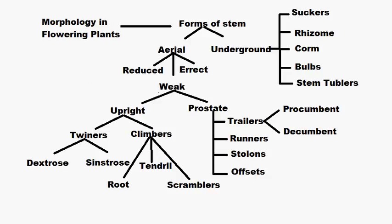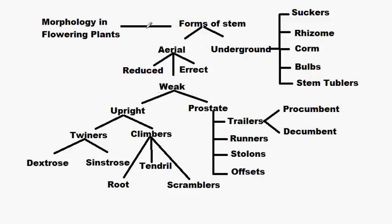Hello everybody. We were talking about morphology in flowering plants, and in this video we are going to discuss about the forms of stem. Stem can be either aerial or underground. Aerial stem can be classified into three types: reduced, weak, and erect.